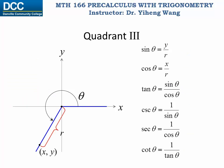If the terminal side of our angle theta is in the third quadrant, then both x and y coordinates are negative. Therefore sine theta is negative, cosine theta is negative, but tangent theta — being the ratio of two negative values — is positive. Then cosecant, secant, and cotangent are the reciprocal functions of the previous three, therefore they will have the same signs as the previous three.